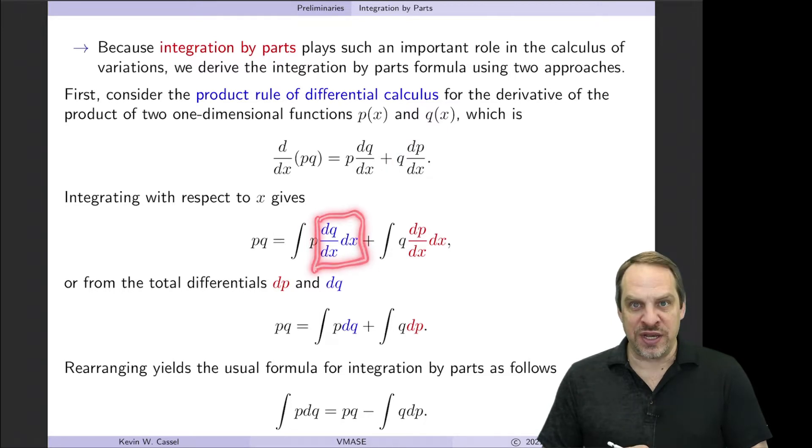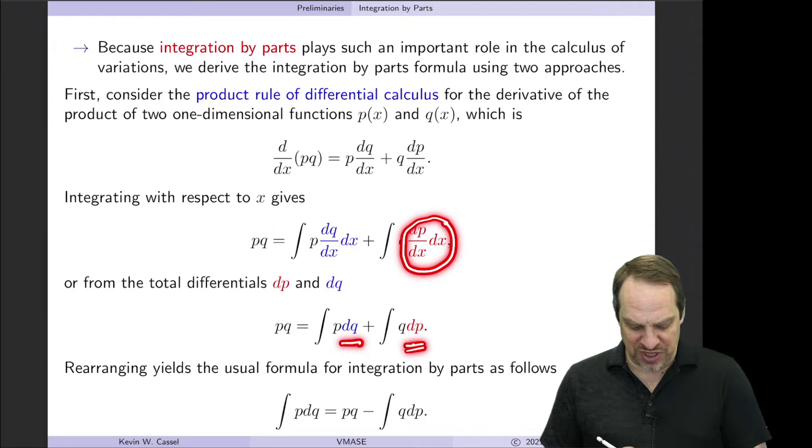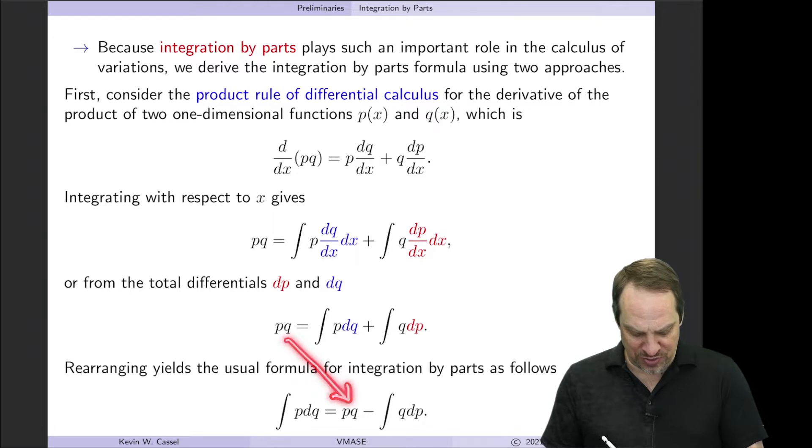But dq/dx dx, well that's just the total differential of q. Likewise dp/dx dx, that's just the total differential of p. So we can rewrite this as dq and this as dp. So if we just flip this around, we'll have that ∫p dq is equal to p times q minus ∫q dp.